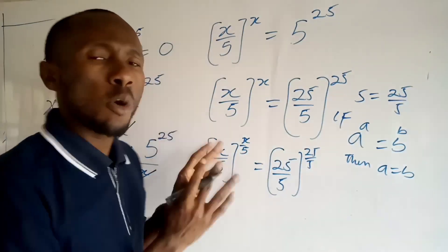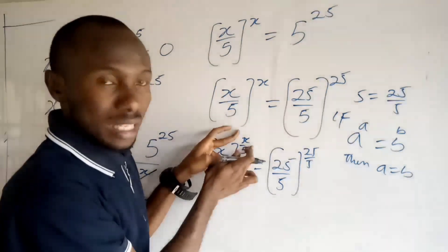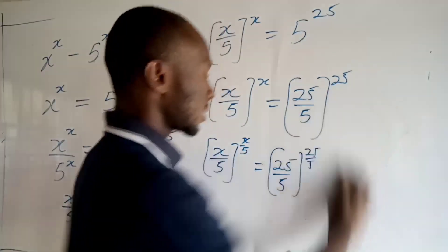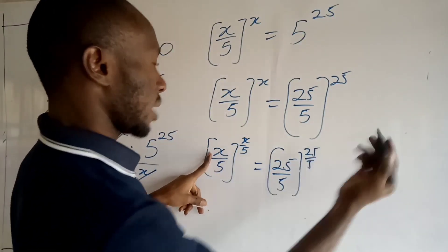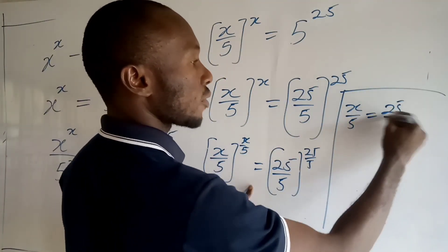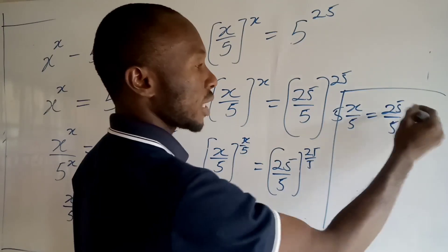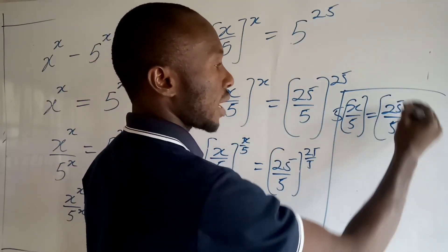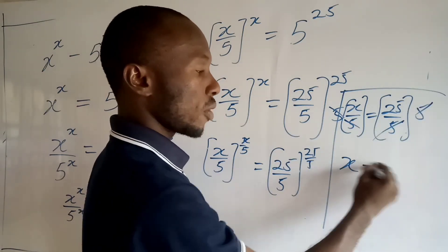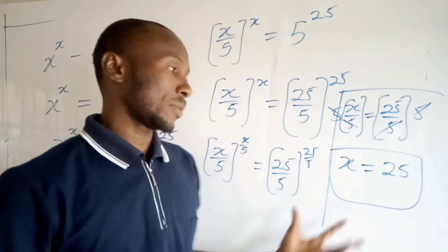Now they look perfectly similar — each side has a base raised to itself. So we can conclude that x over 5 is equal to 25 over 5. Multiplying both sides by 5, the fives cancel and therefore x is equal to 25. I hope this is clear and this is an easy solution for you.